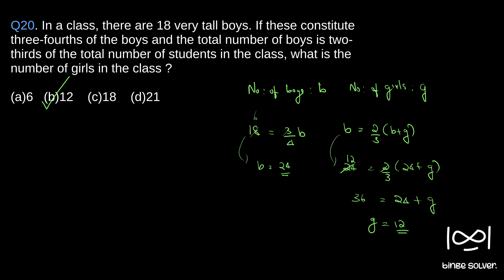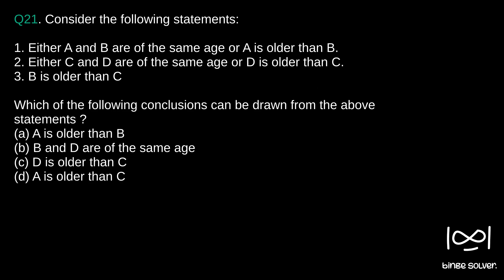Next question, question 21. Consider the following statements. Either A and B are of the same age or A is older than B, so we can write that as A is greater than or equal to B — this is statement 1. Statement 2: either C and D are of the same age or D is older than C, so D is greater than or equal to C. Statement 3: B is older than C, so B is greater than C.